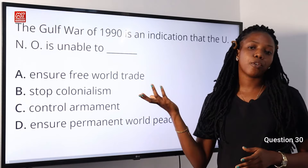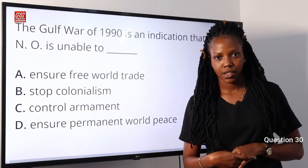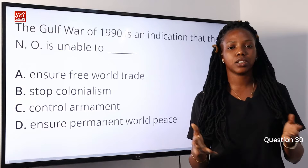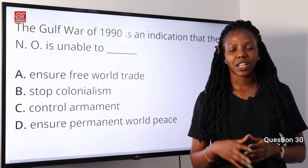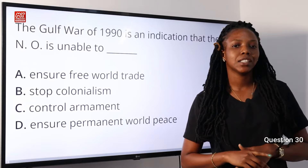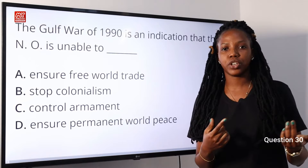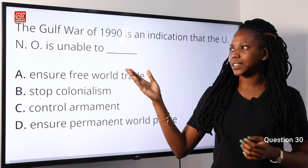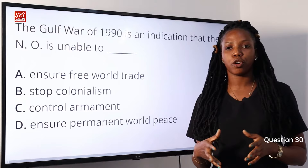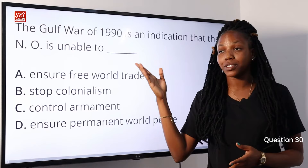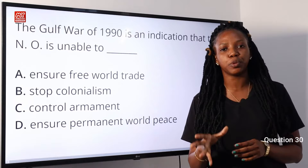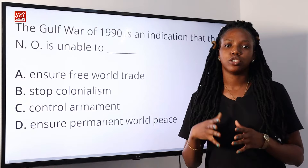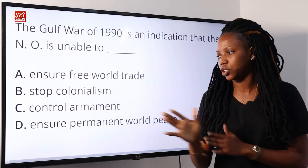The Gulf War of 1990 is also referred to as the Persian War of 1990. This war is about Iraq and Kuwait — Iraq invaded Kuwait in a bid to control the lucrative oil supply. In response, the United States, together with the UN Security Council, demanded that Iraq's dictator Saddam Hussein retrieve his troops from Kuwait. However, he refused and the war escalated. The United Nations Organization is responsible for ensuring peace among nations, but the Gulf War indicates that the UNO is unable to ensure permanent world peace. Option D is the correct answer.